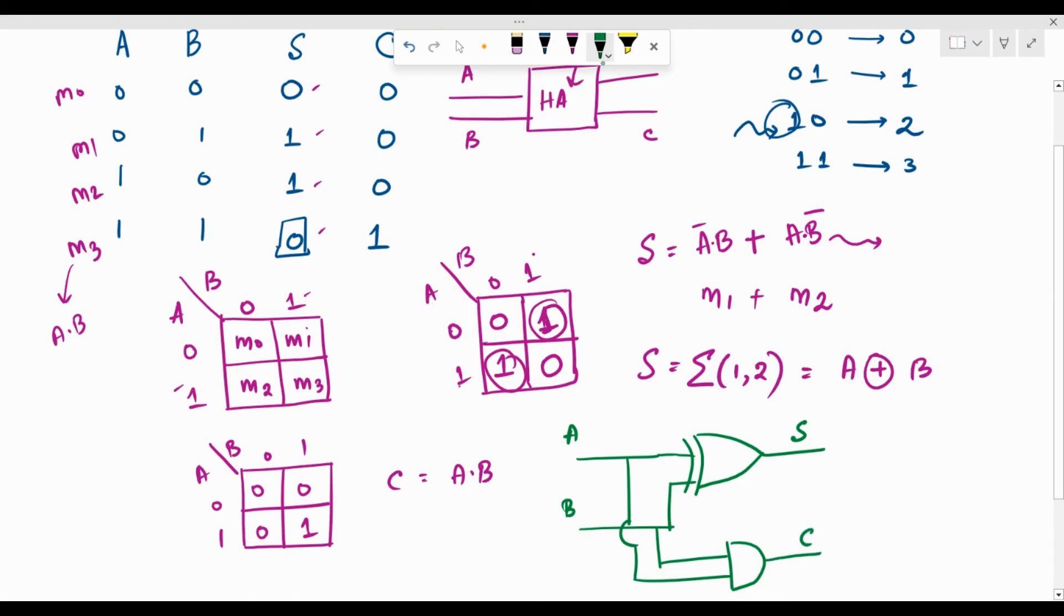So, this is going to be my carry. So, now, we have designed this black box which is going to act like a half adder. So, where for different combinations of A and B, we are going to get the sum and the carry accordingly.